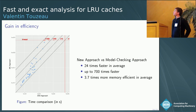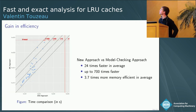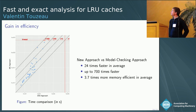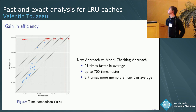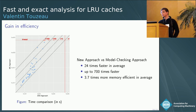We also compared our approach to our previous one using a model checker. As shown in the figure, we are always faster, and the larger the benchmark, the larger the speedup. On average, our new approach is 24 times faster, and for the largest benchmarks, it is more than 700 times faster. We also consume less memory, as detailed in the paper.